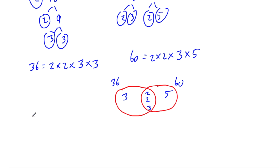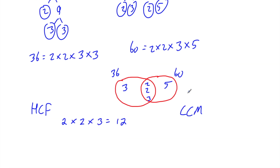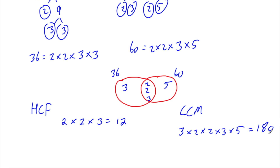Now let's find the highest common factor: multiply the numbers in the middle — 2 × 2 × 3 = 12. So the highest common factor of 36 and 60 is 12. For the lowest common multiple, multiply all numbers in the Venn diagram: 3 × 2 × 2 × 3 × 5 = 180. So the lowest common multiple of 36 and 60 is 180.